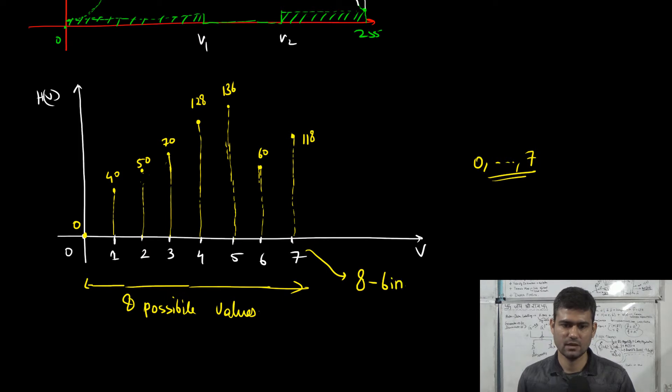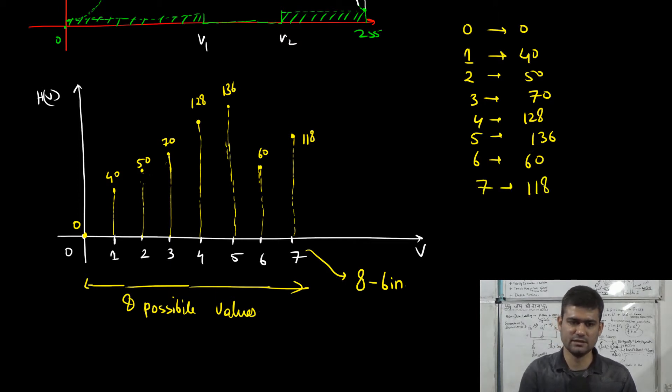The first bin has 0 pixels, the second bin corresponding to pixel 1 has 40 pixels, third bin has 50, then 70, then we have 128, then 136, then 60, and finally 118. This is just a numerical example to show you what this redistribution looks like.